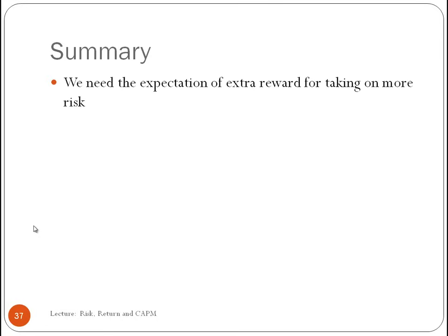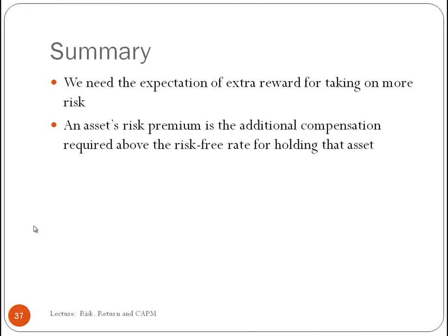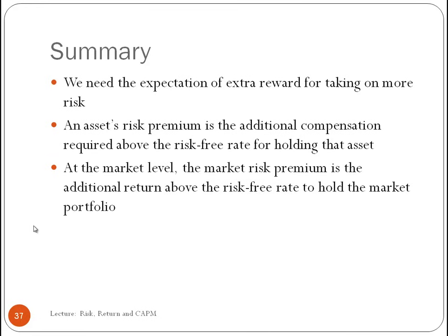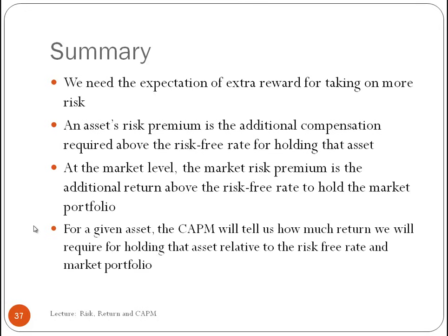In summary: we need the expectation of higher reward for taking on more risk. An asset's risk premium is the additional compensation required above the risk-free rate. At the market level, the market risk premium is the additional return above the risk-free rate for holding the market portfolio. For a given asset, the CAPM tells us the required return: required return = risk-free rate + beta × market risk premium. That wraps up this lecture.